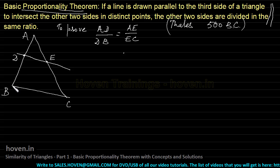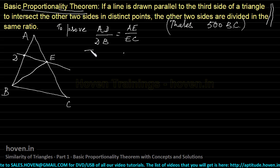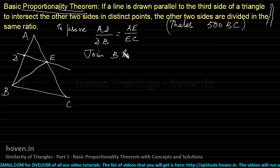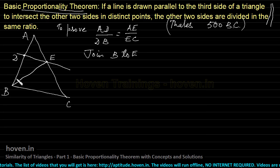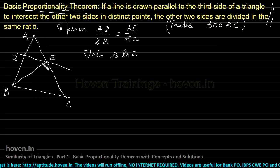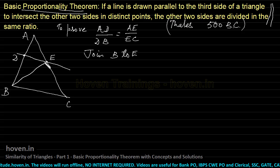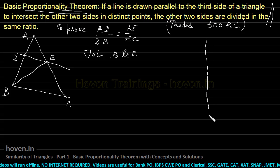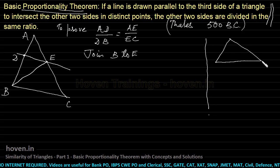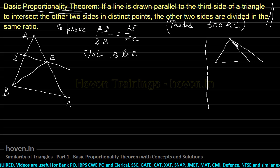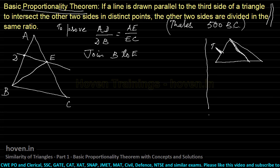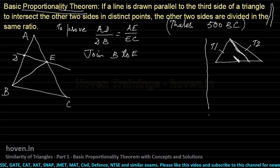The proof is done by joining B to E. When we join B to E, we observe two triangles. These two triangles share a common edge. Let me explain an interesting property of two triangles when they share a common edge. Suppose this is the common edge — common border to two triangles. Let this triangle be called T1 and this triangle T2.